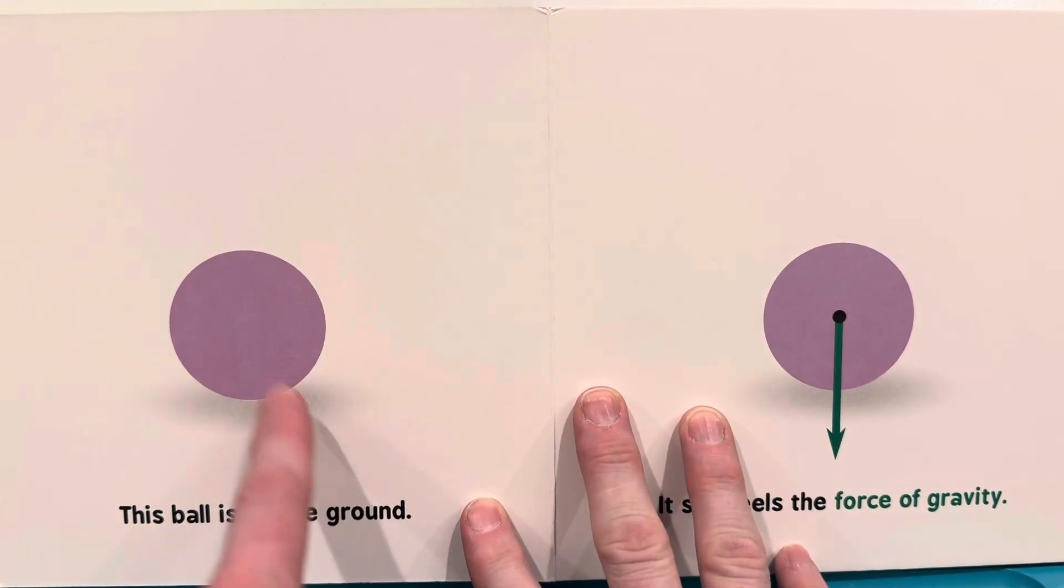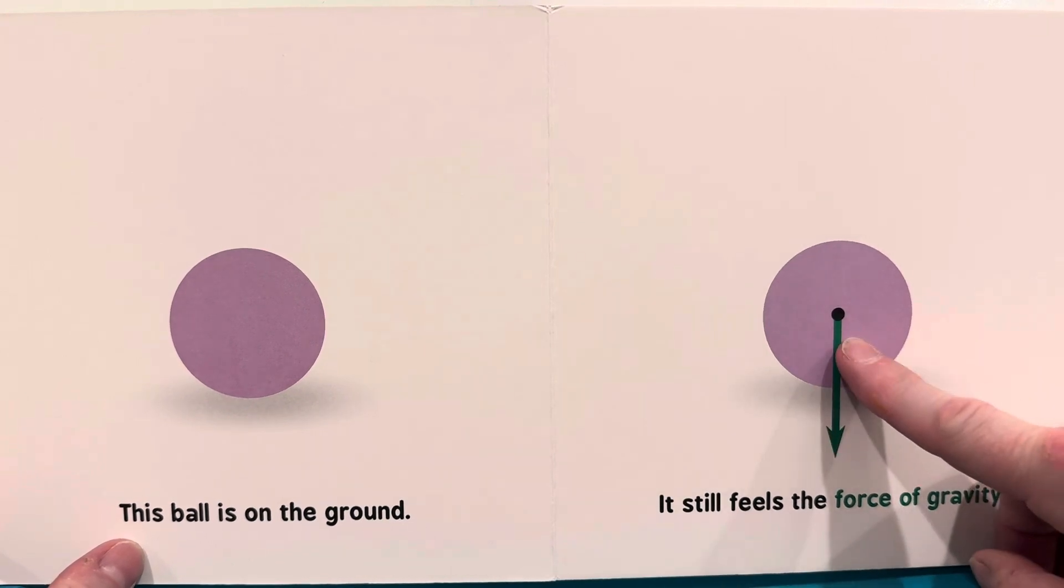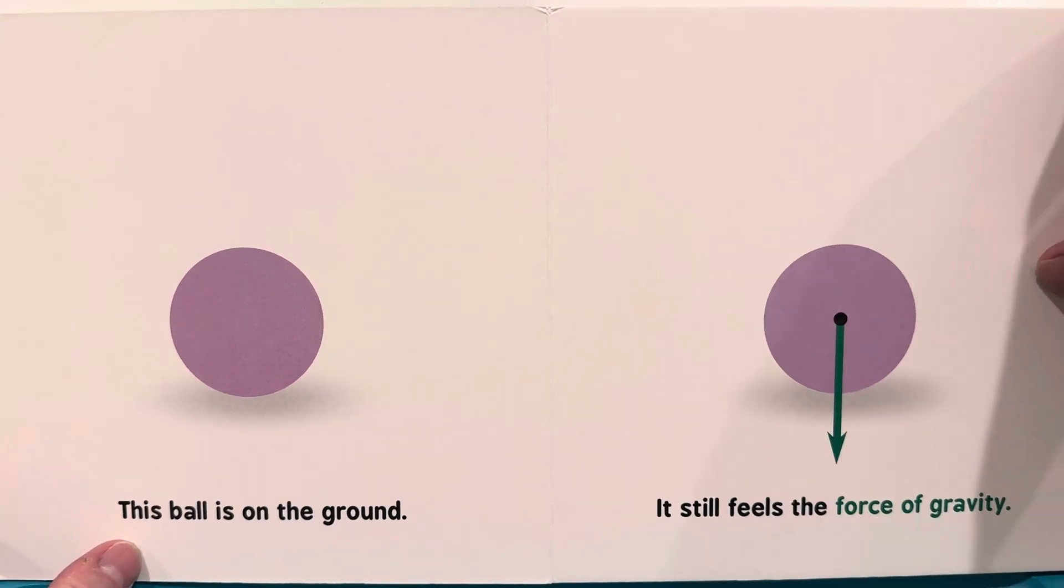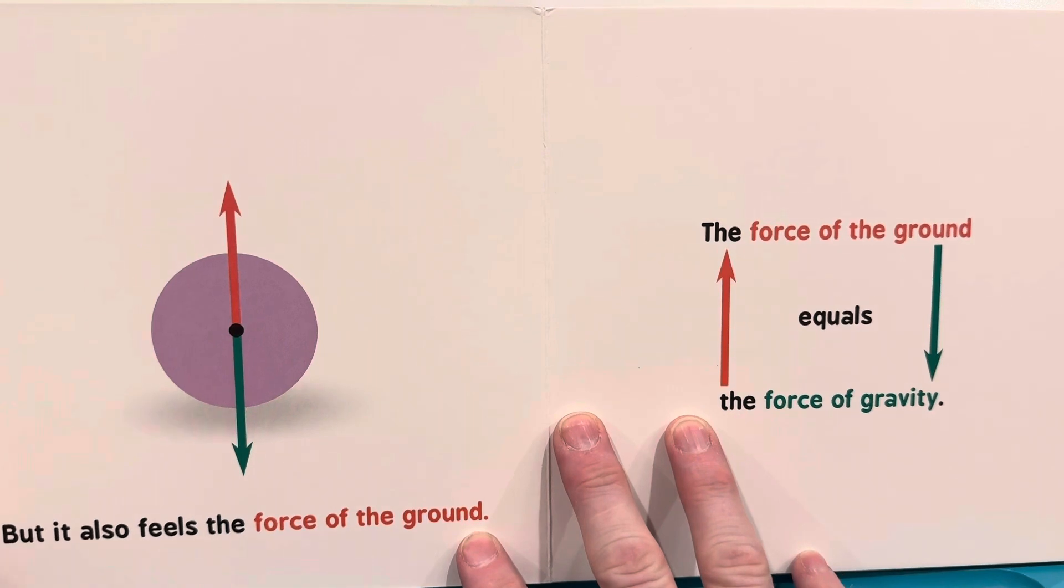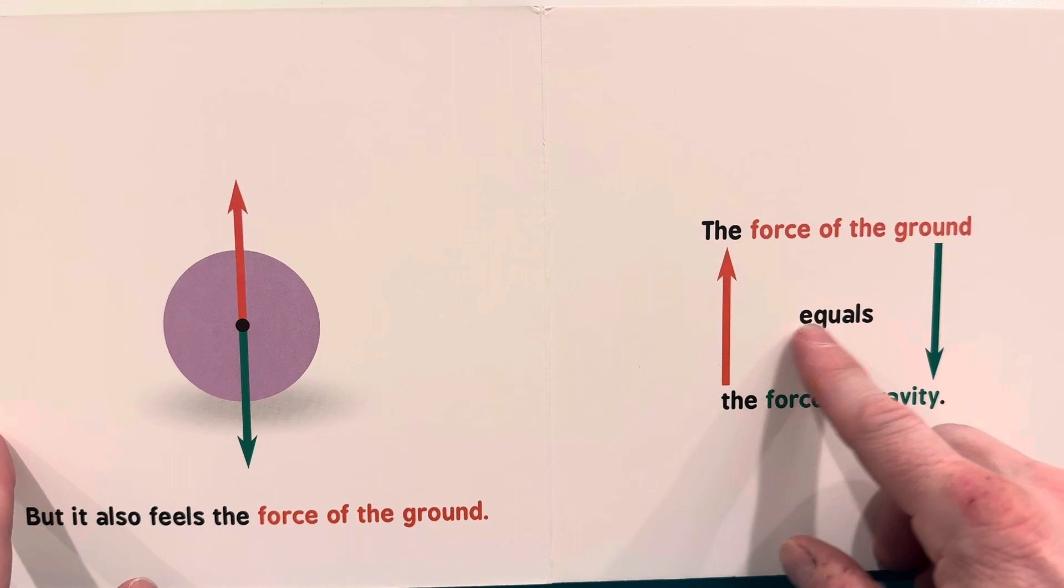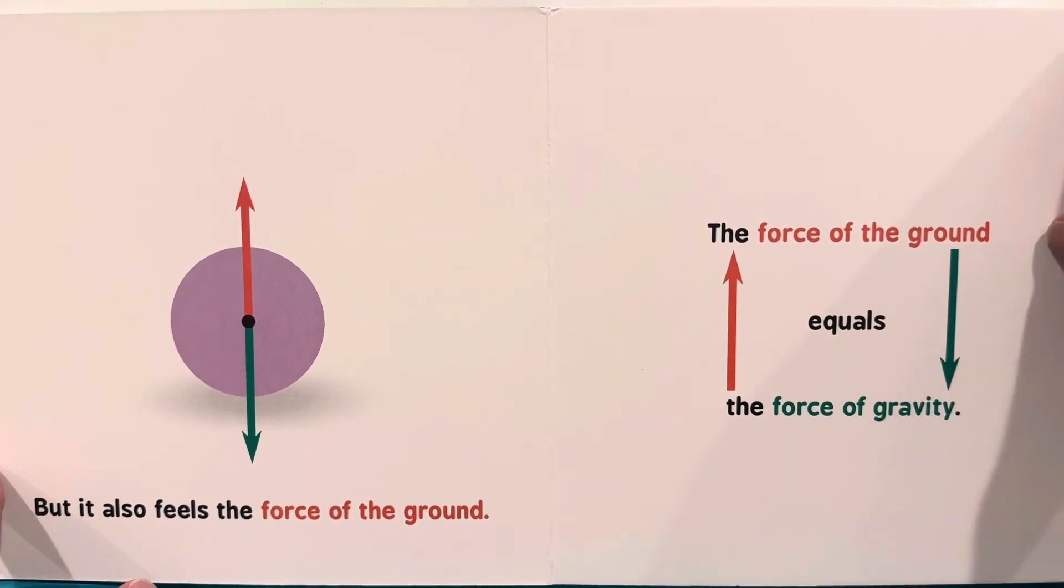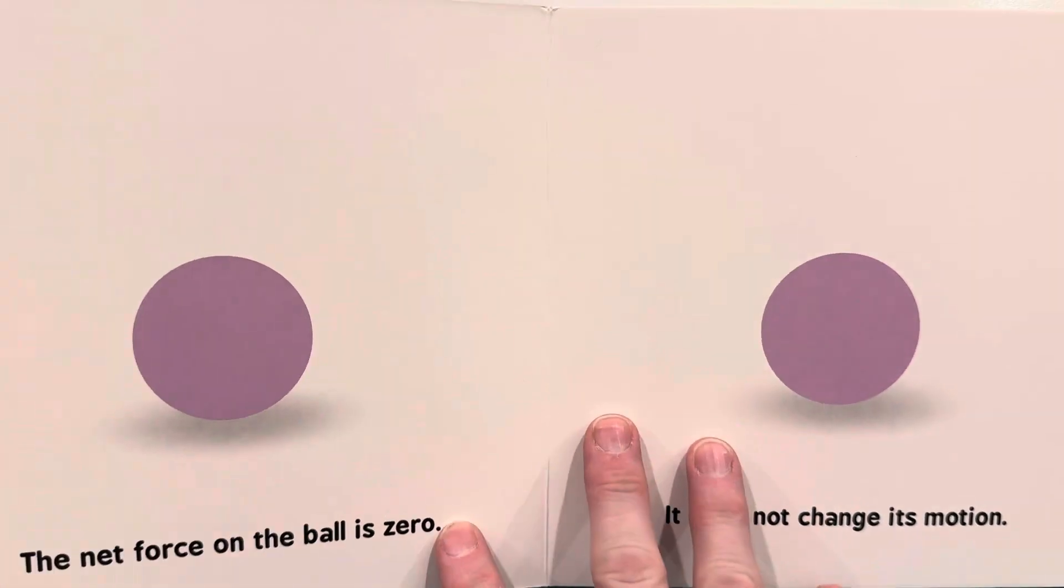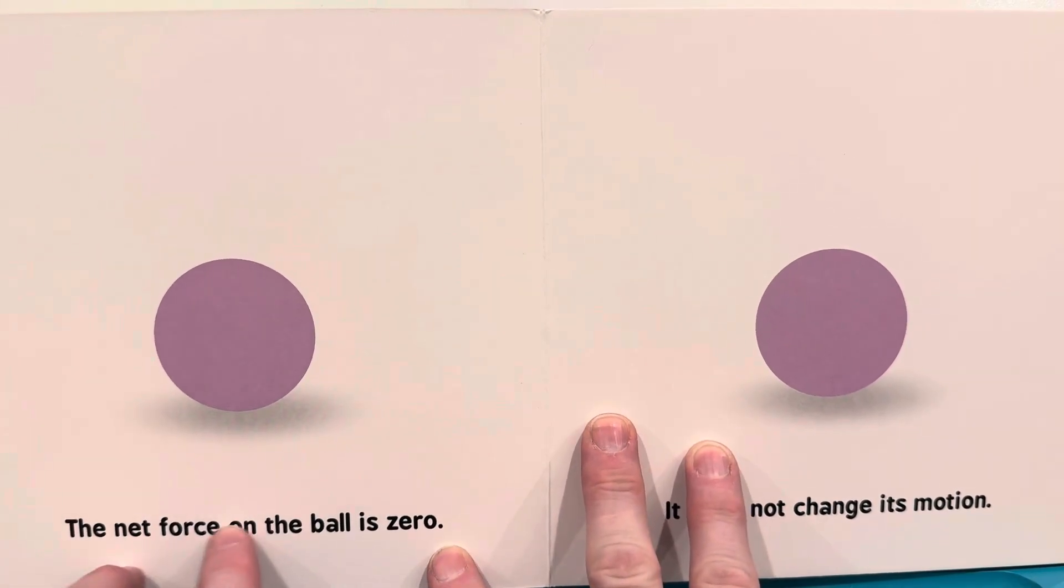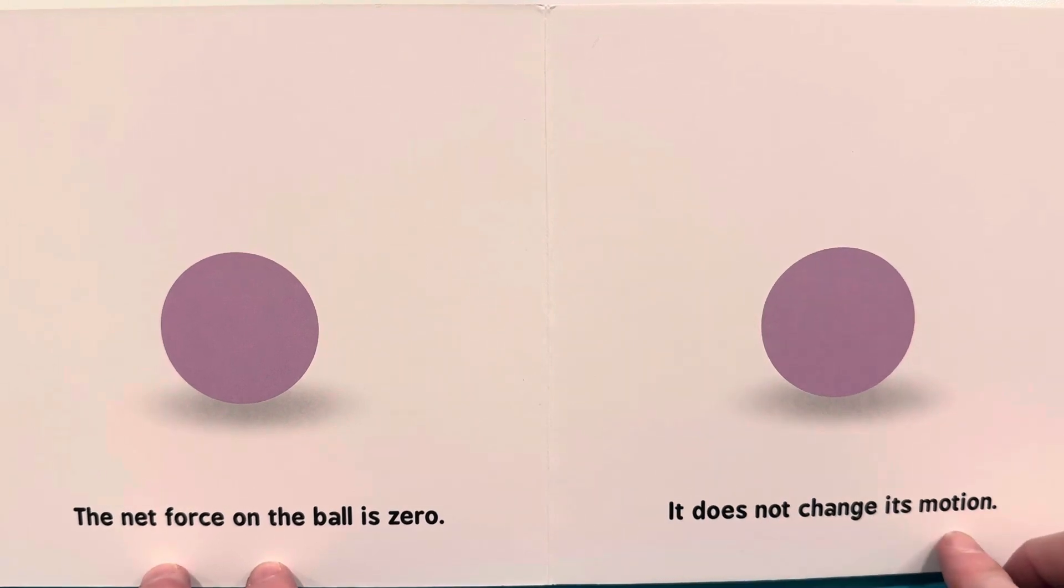This ball is on the ground. It still feels the force of gravity, but it also feels the force of the ground. The force of the ground equals the force of gravity. The net force of the ball is zero. It does not change its motion.